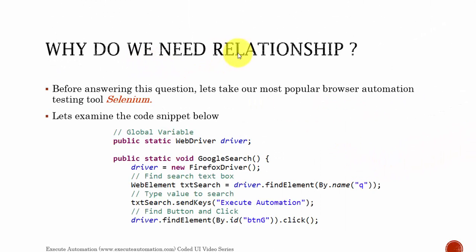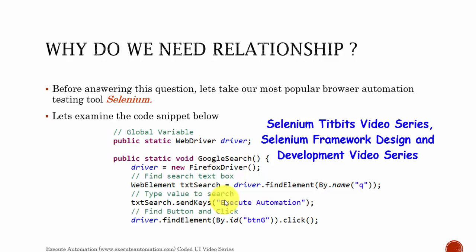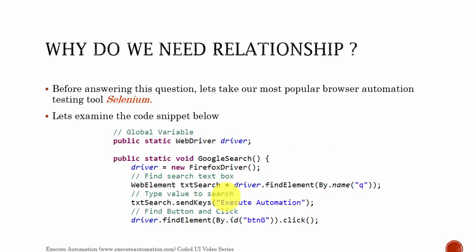So why do we really need the relationships in Coded UI testing? Before answering this question, let's take our most popular browser automation testing tool — Selenium. If you are familiar with Selenium, this code is going to be a cakewalk for you. If you are not familiar with Selenium, don't hesitate to watch the Selenium tidbits video of this channel and also the Selenium framework design and development video series. You can also go to exitautomation.com and search for Selenium articles right there.